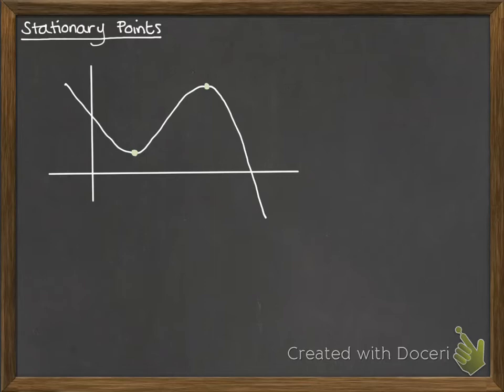So now let's look at those points there where it changes between being increasing or decreasing and what's happening at those points. Now these points here actually have a gradient of zero. If we drew the tangent there and took the gradient of it it would be zero, it would be a horizontal line.